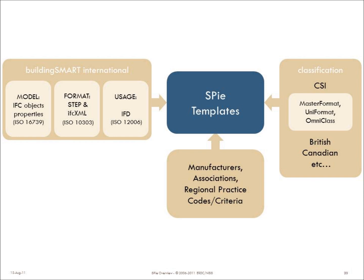We also have standards associated with how we classify the information, and those are regional standards. In the United States, the Construction Specifications Institute has MasterFormat, UniFormat, and the emerging OmniClass standard. The British Standards Institute has theirs, Canadians have theirs, and others have their own. Flexible classification is an important idea in the SPY template so we have classification appropriate to specific regions. The specific properties themselves are identified by manufacturers, manufacturing and professional associations, regional practice codes, and other criteria.